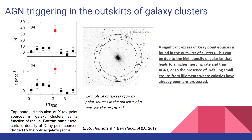The second major thing we observe is AGN triggering in the outskirts of galaxy clusters. A significant excess of X-ray point sources is found in the outskirts of clusters. This can be due to the high density of galaxies leading to a higher merging rate and thus AGN activity, or to the presence of infalling small groups from filaments where galaxies have already been pre-processed.